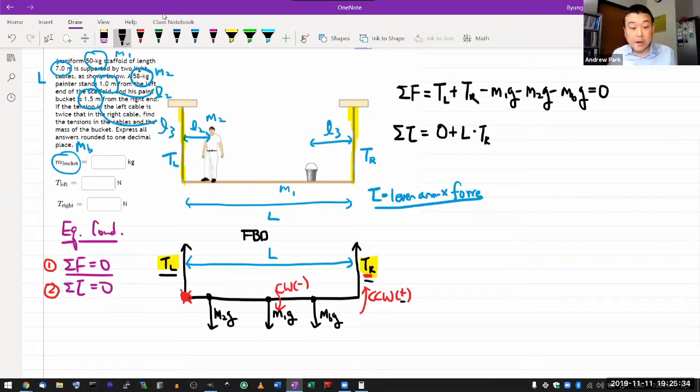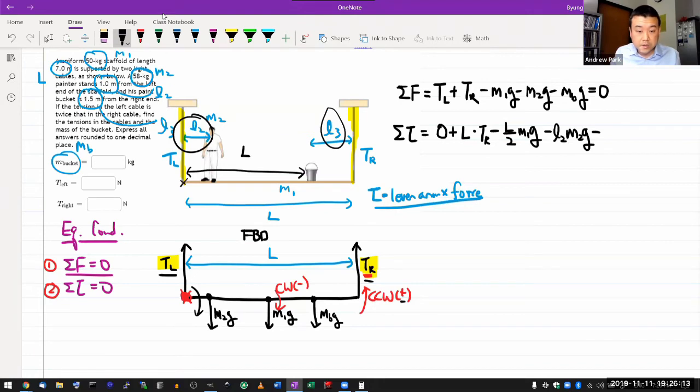Okay, all the rest of the forces are clockwise about this point. So they are all going to get a negative sign. Let's just write them down, matching pair at a time. So minus, M1 is acting at the center of the scaffold. So the lever arm should be L over 2 times the force, M1g, minus M2g, the distance we were given as L2 earlier. L2, M2g, minus. Now this one we need to figure out. We are given L3, but that's not the distance from the center of rotation. The distance from the center of rotation is this, which should be L minus L3. So L minus L3, M bucket g. And that should add up to zero.